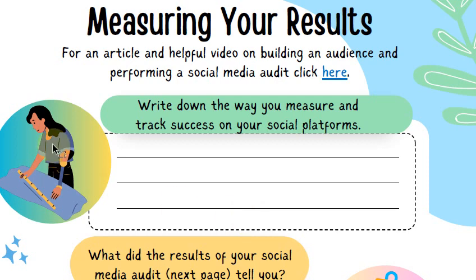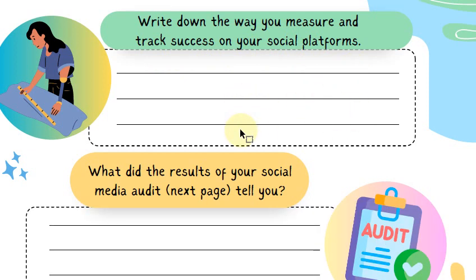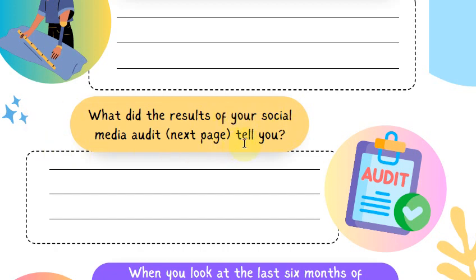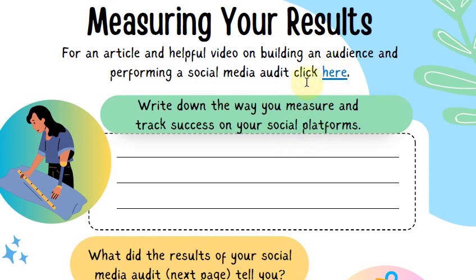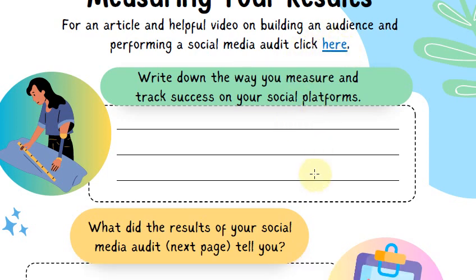You also want to measure your results. We have an article on how to do a social media audit — if you're interested, you can click there. Write down the way you measure and track success on your social media platforms. What does success mean to you? More likes, more shares, more engagement in general? Then, what did the results of your social media audit tell you? On the next page there's a worksheet you can use to do a social media audit, and you can click the link for details on how to perform one.